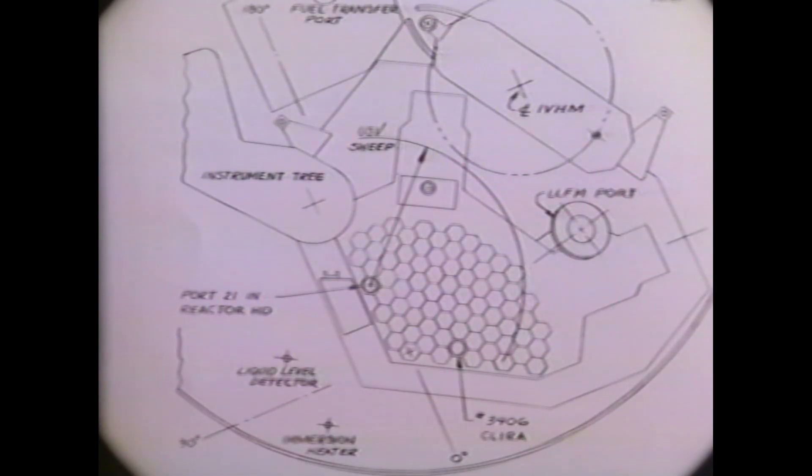This drawing identifies the location of installed equipment in the sodium-filled test vessel. Equipment such as the fuel handling machine, the instrument tree, the in-reactor test assembly, and the immersion heater are shown relative to the installed position of the under-sodium viewing system.